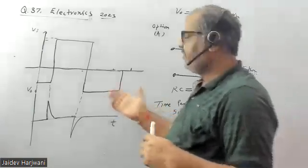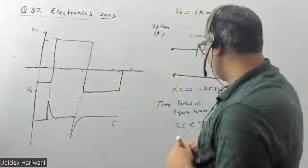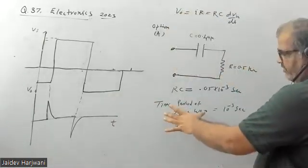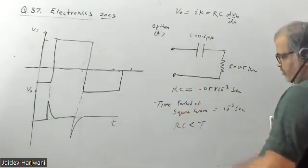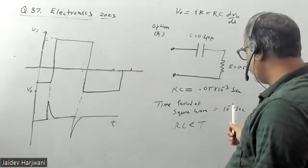In the question, the frequency of the input wave is given as one kilohertz. That means the time period for the input is 10 to the power minus three seconds. Now your RC should be less than 10 to the power minus three seconds.